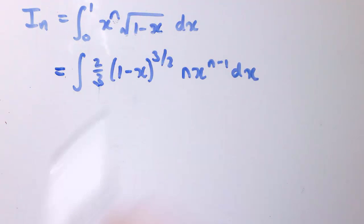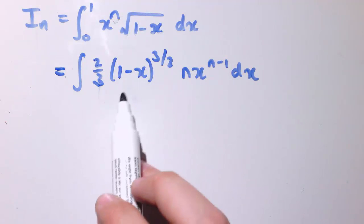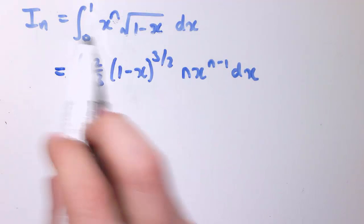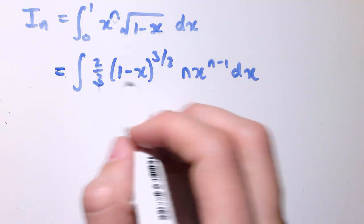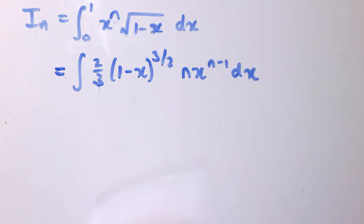Just rewritten that here to get some more space. And now this isn't quite just in the form of i n as it was before, but if we think about what the 1 minus x to the 3 over 2 is, well, we could write that as 1 minus x times 1 minus x to the 1 half.